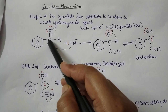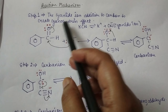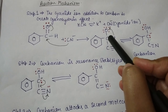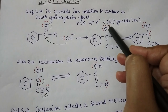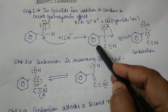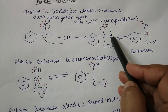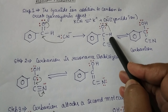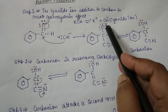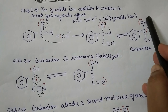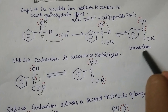Let's start with the reaction mechanism of benzoin condensation. In the first step, the cyanide ion undergoes nucleophilic addition to the carbonyl carbon to create a cyanohydrin. The cyanide ion is generated from potassium cyanide: KCN splits into K⁺ and CN⁻. This cyanide ion attacks the carbonyl carbon, forming a bond with it, and the double bond between carbon and oxygen breaks, so oxygen acquires a negative charge.